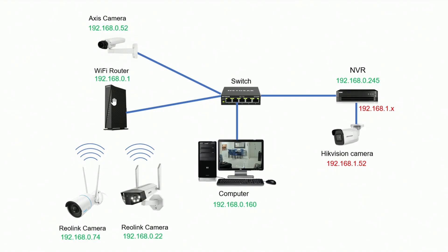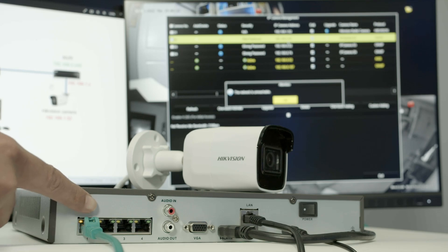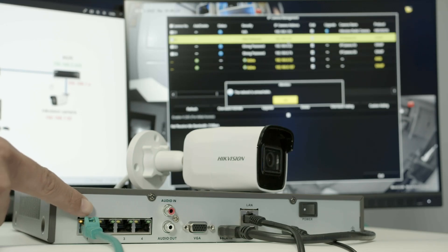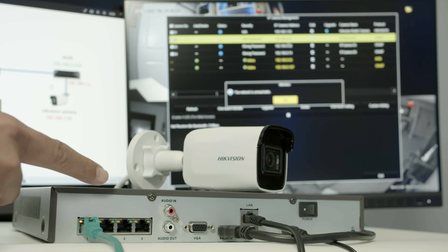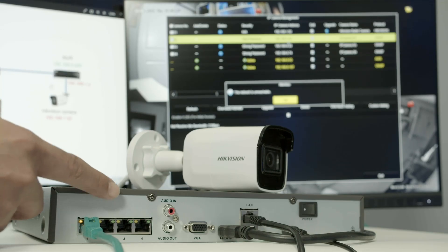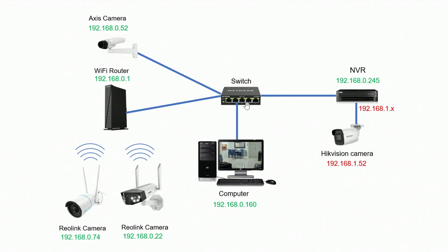Everything shows green because they are on network 0. The only one with red is the camera connected directly to the NVR's PoE port. If I remove the Hikvision camera from the PoE port and connect it to the switch instead, I'd have to change its IP to the 0 network — either manually or the router would assign it a 0-network IP.